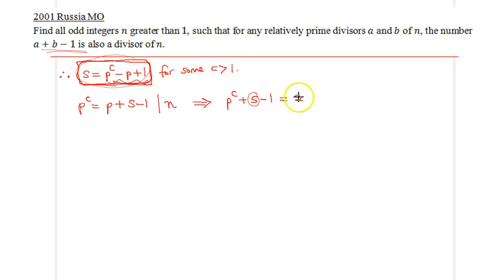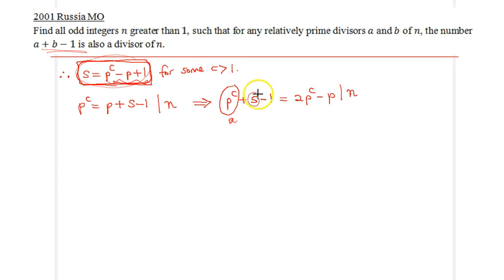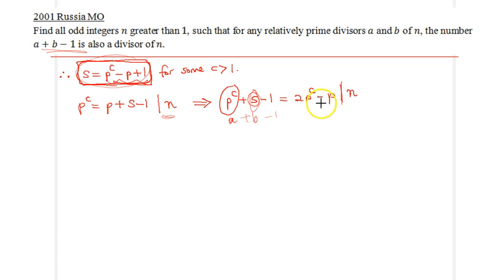Replacing s with the expression p^c minus p plus 1, we get p^c plus s minus 1 equals 2 times p^c minus p, which also divides n. When we factor this expression, we get p times (2p^(c-1) minus 1). Since this has no factors of p in the second term, and 2p^(c-1) minus 1 divides n, it must divide s. So 2p^(c-1) minus 1 divides s.